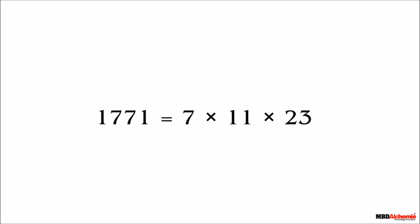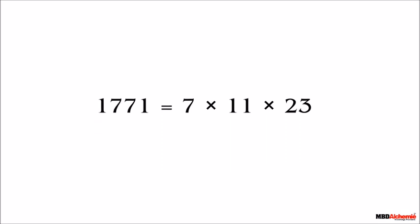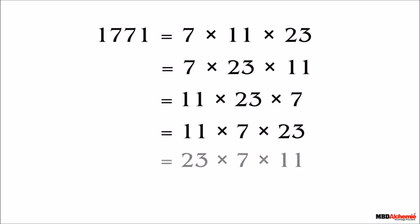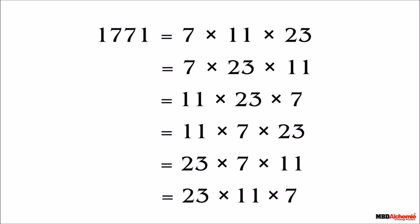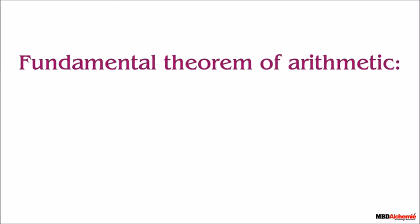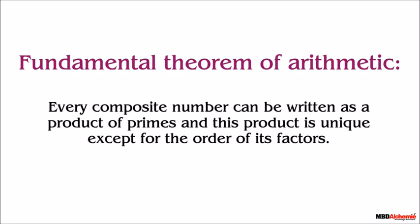Have you noticed anything here? We have written 1771 as 7 into 11 into 23. By the commutative law of multiplication, changing the order of the product doesn't change the result. This means we can write it as 7 into 23 into 11, or 11 into 23 into 7, or 11 into 7 into 23, or 23 into 7 into 11, or 23 into 11 into 7. All these products of prime numbers represent the same number, 1771, meaning this product is unique. This is what the fundamental theorem of arithmetic says: every composite number can be written as a product of primes, and this product is unique except for the order of its factors.